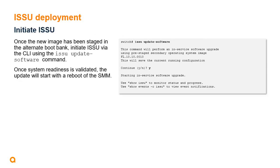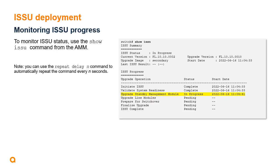Once the new image has been staged in the alternate boot bank, initiate ISSU from the CLI using the issu update software command. This will prompt you to save the running configuration to startup, and once the validation checks are complete, the update will start with a reboot of the standby management module. You can use the show issu or show events commands to monitor the status of the update. The show issu command displays the current status of the ISSU process, including a timeline of the different steps and when each step was started. Note that you can use the repeat command to automatically rerun the command at a specified interval.